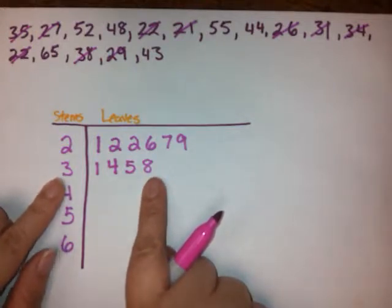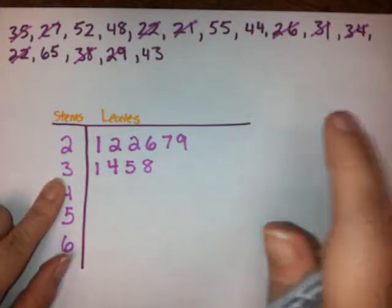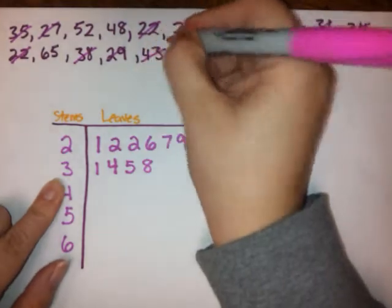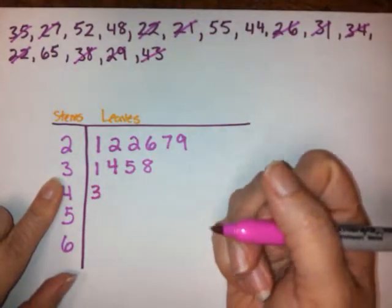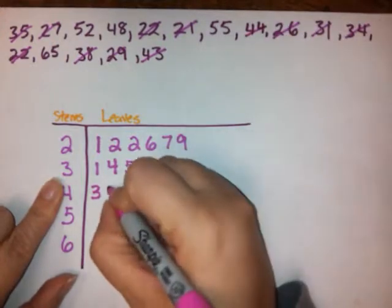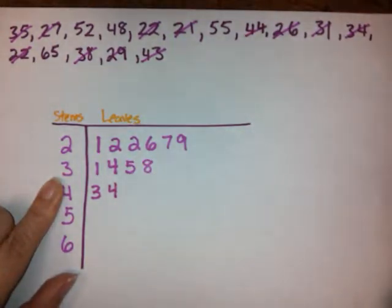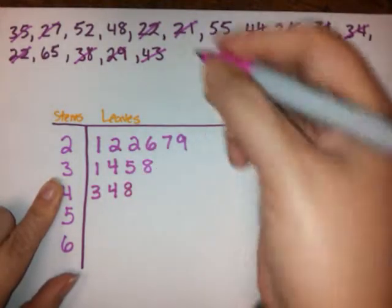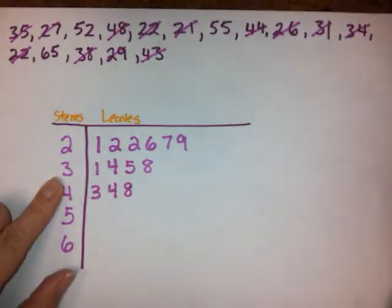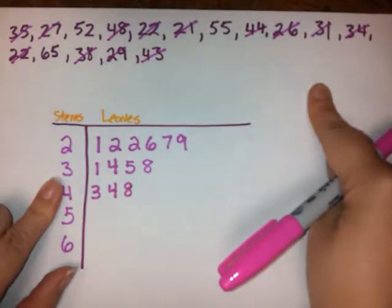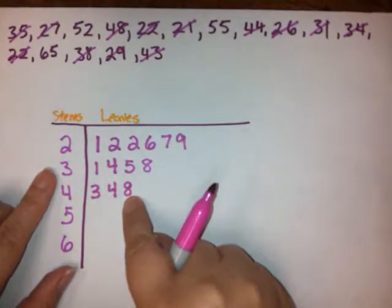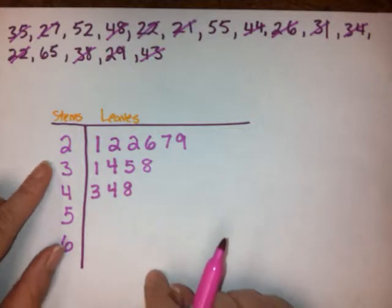So let's look at the 40s now. 40, nope. 41, nope. 42, no, but I do have a 43 here. 43. I have a 44. No 45s, no 46s, no 47s, but I have a 48. No 49s. Okay, so I'm done with my 40s. There were only three 40s in my data set. And I can easily see that by counting the number of leaves that I had three numbers that were in their 40s.